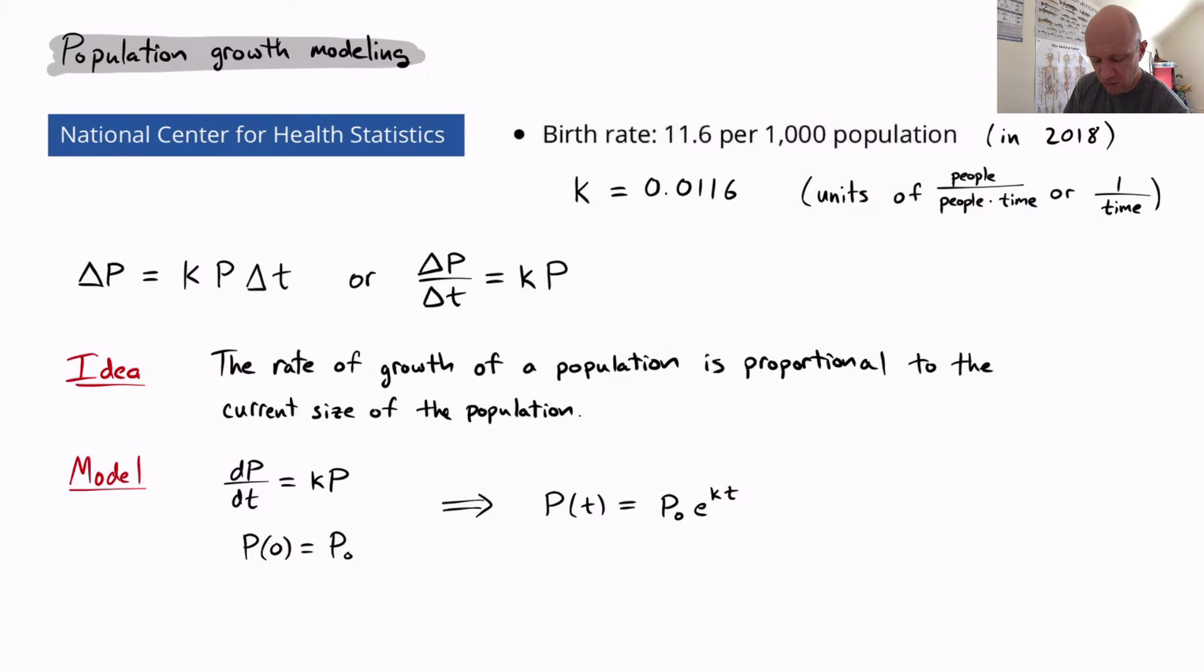Well, we've already solved a differential equation that looks a lot like dP/dt equals kP. We found a general solution of c*e^t when k was 1, but in general it would be c*e^(kt). And if we plug in this initial value, we'll find that c equals P0. So we get a solution to this initial value problem, which looks like P(t) equals P0 times e^(kt).